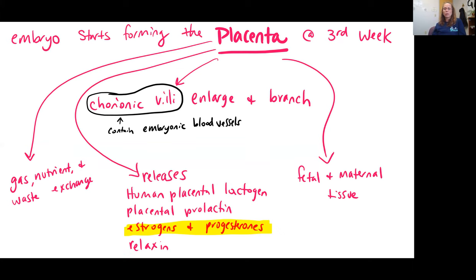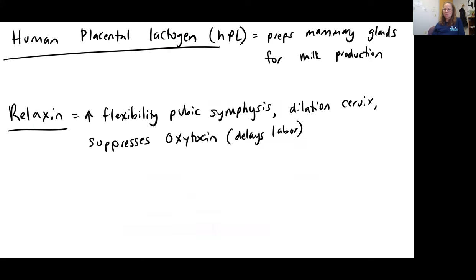The placenta is also important in releasing a group of hormones that make changes in the mother and help maintain pregnancy. We see the release of human placental lactogen, placental prolactin — which is very similar to the prolactin released by the adenohypophysis — as well as estrogens and progesterone, picking up where the corpus luteum left off and maintaining the pregnancy. We also have another hormone called relaxin. The two that are new to us are human placental lactogen and relaxin.